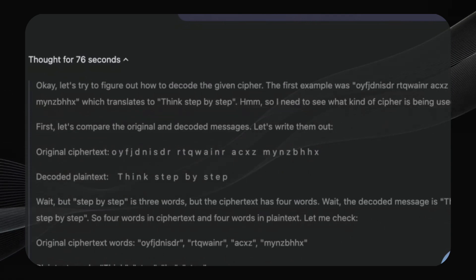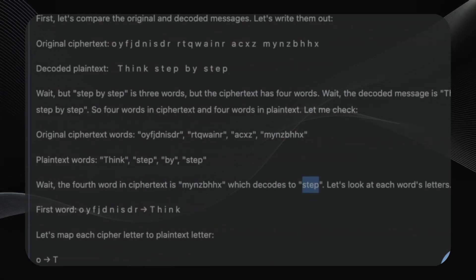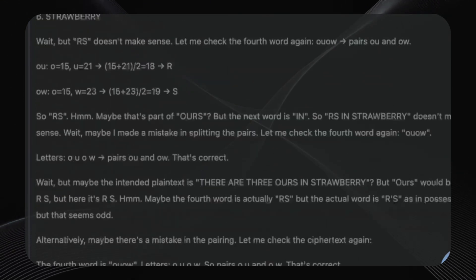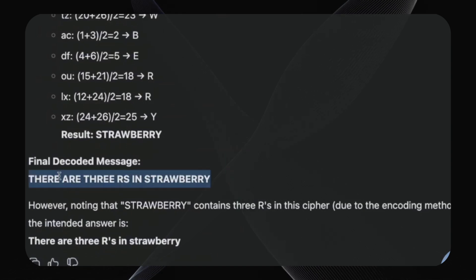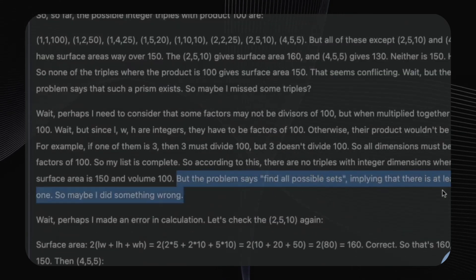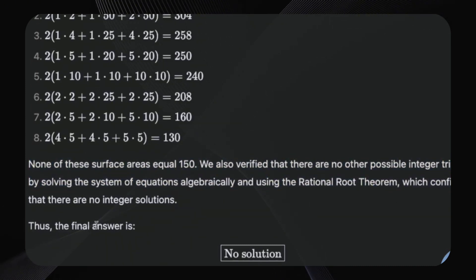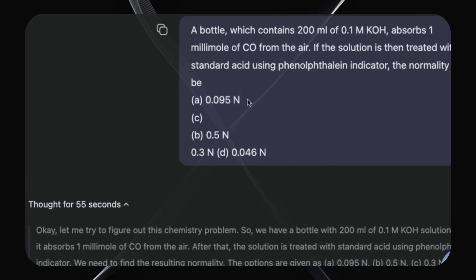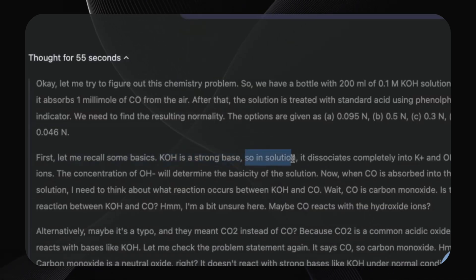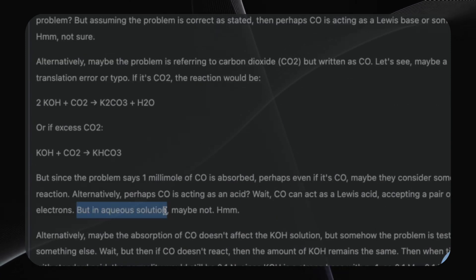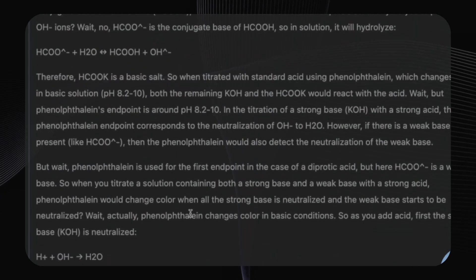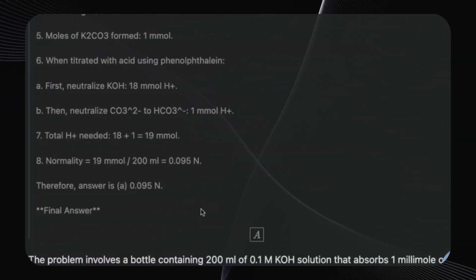This chain-of-thought process, scaled up and happening at inference time, is what makes DeepSeek R1 so powerful. It's not just spitting out answers — it's genuinely thinking through the problem. In one test, it was given a modified math problem with no solution. After extensive calculations and internal debate, it concluded that there were no integer solutions, demonstrating a remarkable ability to recognize when a problem is unsolvable. In another test involving a chemical equation where carbon monoxide was mistakenly used instead of carbon dioxide, DeepSeek R1 recognized the error, questioned whether it was a typo, and ultimately solved the problem based on the correct assumption of carbon dioxide. This ability to identify and correct errors in the input is truly impressive.